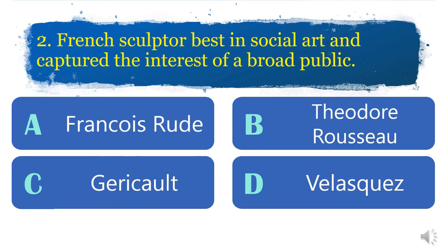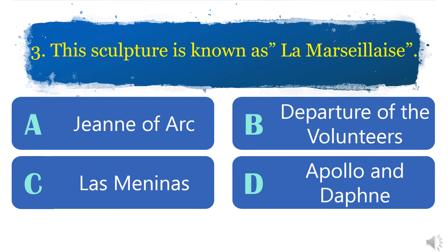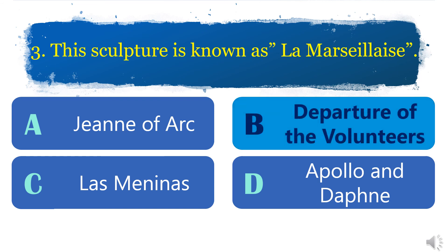Number 2: French sculptor best known for social art and capturing the interest of a broad public. A. François Rude. B. Théodore Rousseau. C. Géricault. D. Velasquez. The answer is letter A, François Rude. Number 3: The correct answer is Departure of the Volunteers, letter B.